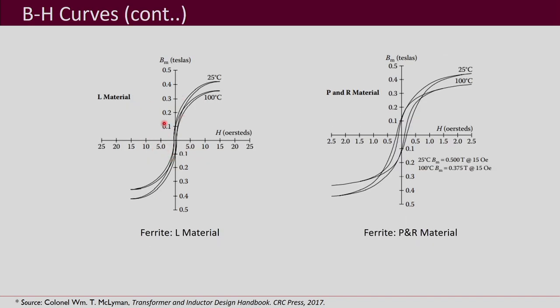These are BH curves for L material, and P and R material — the BH curve shape is again very different. These are given for two temperatures: 25°C and 100°C. For L material, the BH curve is very thin in width, whereas for P and R material the BH curve is thicker. This gives an idea that different materials have different BH curves.